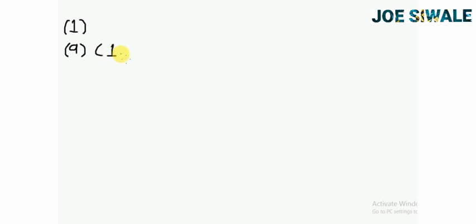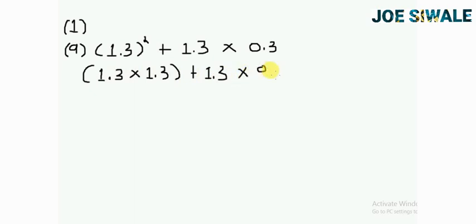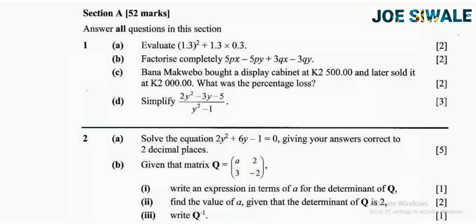To evaluate 1.3 squared plus 1.3 multiplied by 0.3, the first thing I'm going to say is 1.3 multiplied by 1.3 plus 1.3 multiplied by 0.3. So 1.3 multiplied by 1.3, that's 1.69 plus 1.3 multiplied by 0.3, that's 0.39. So 1.69 plus 0.39, that's 2.08.